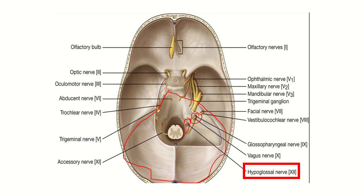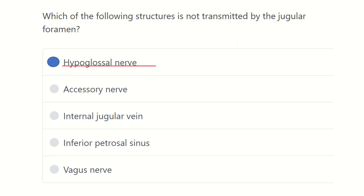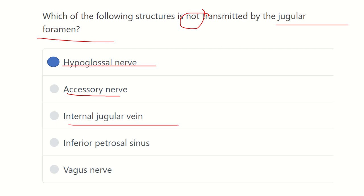The hypoglossal nerve has a dedicated canal in the posterior cranial fossa — the hypoglossal canal. So the hypoglossal nerve does not pass through the jugular foramen. The jugular foramen transmits the accessory nerve (cranial nerve 11), the internal jugular vein, the inferior petrosal sinus, and the vagus nerve. Thank you.